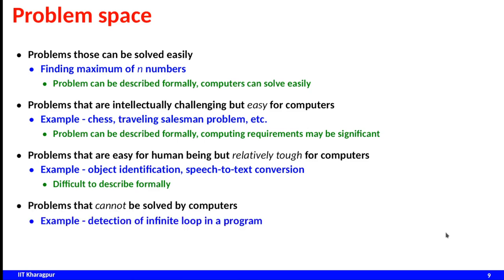There are also problems that cannot be solved by computers at all, like detection of an infinite loop in a program — an undecidable problem. We are not looking into that category in this course. We will mostly focus on the second category of problems, and for the third category, machine learning and deep learning based solutions are generally required.